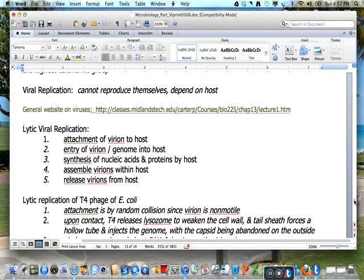In lytic replication of the T4 phage in E. coli, attachment is by random collision since the virion is non-mobile. Upon contact, T4 releases lysozyme to weaken the cell wall.